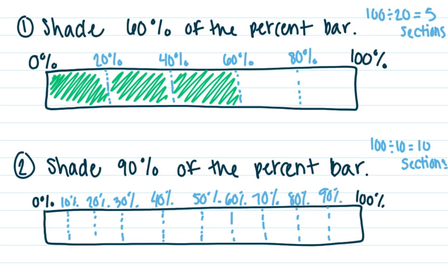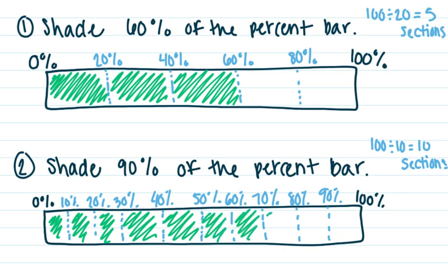Okay, and they said to shade in ninety percent. So ten percent, twenty, thirty, forty, fifty, sixty, seventy, eighty, and ninety. There you go.